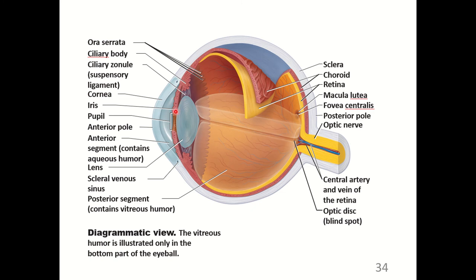The choroid is the vascular layer that nourishes the retina, which is the neural layer containing rods and cones. The sclera surrounds the eye, maintains its shape, and connects to the skeletal muscles that move the eye up, down, left, right, and rotate it. The optic nerve is a continuation of the retina that sends visual signals toward the brain.